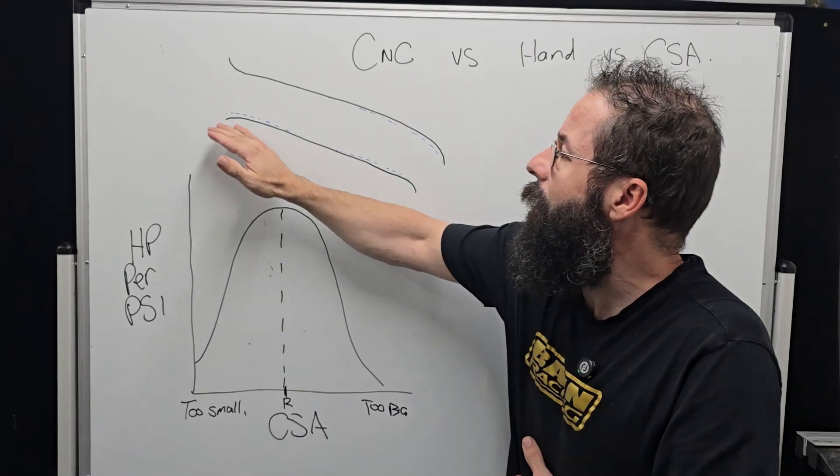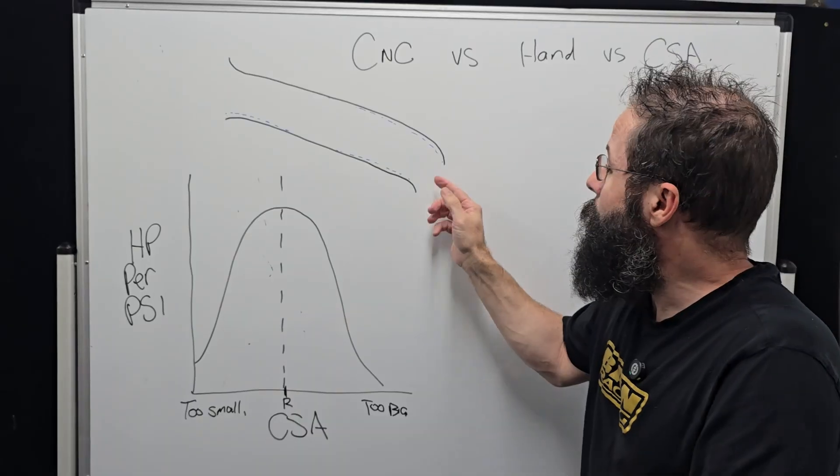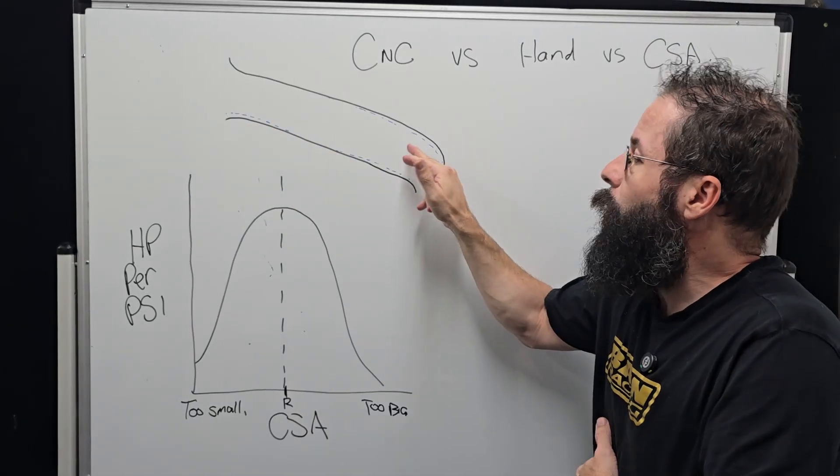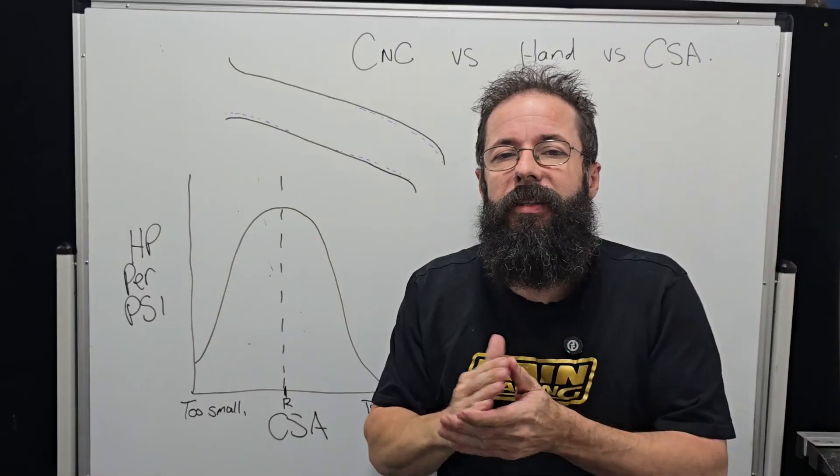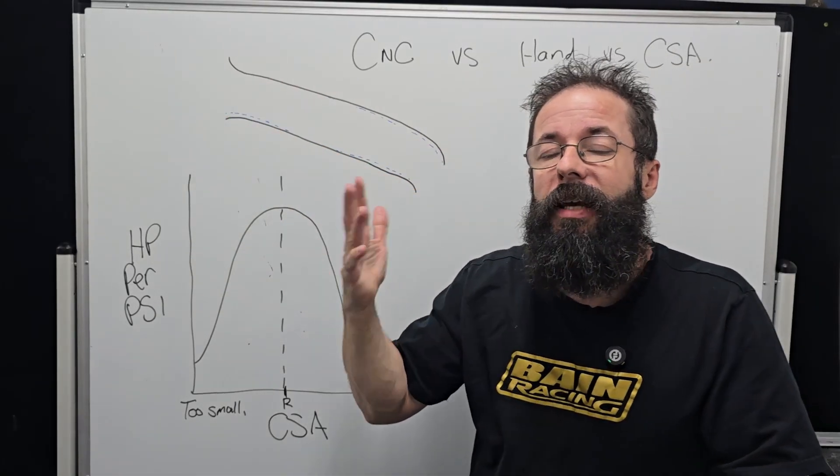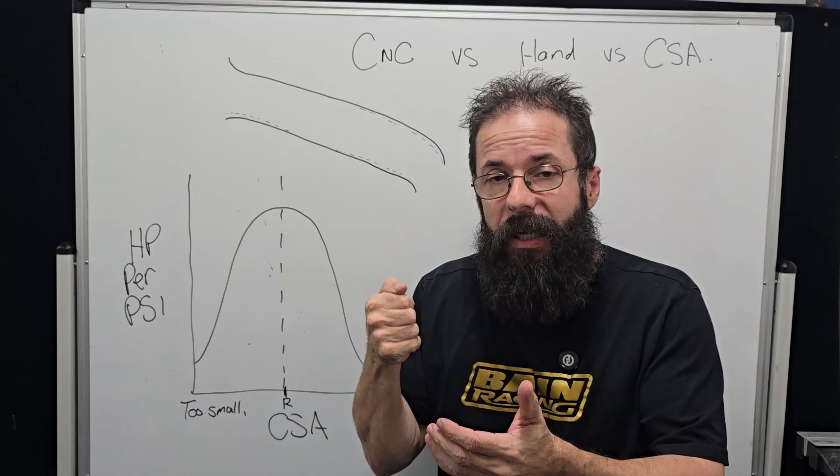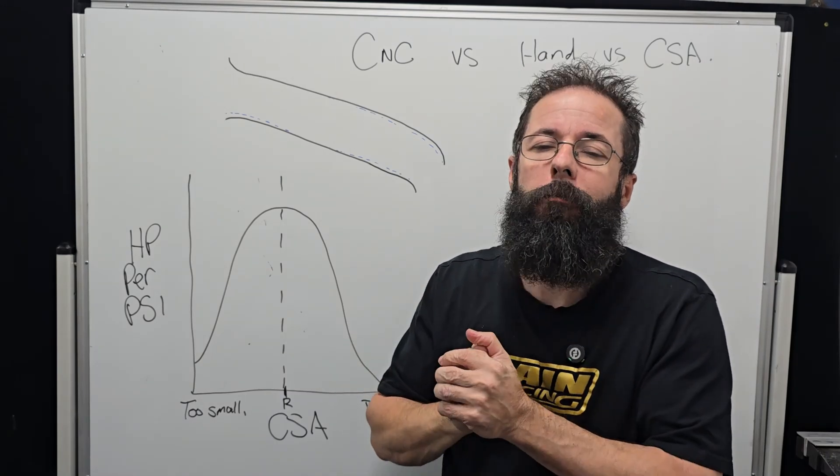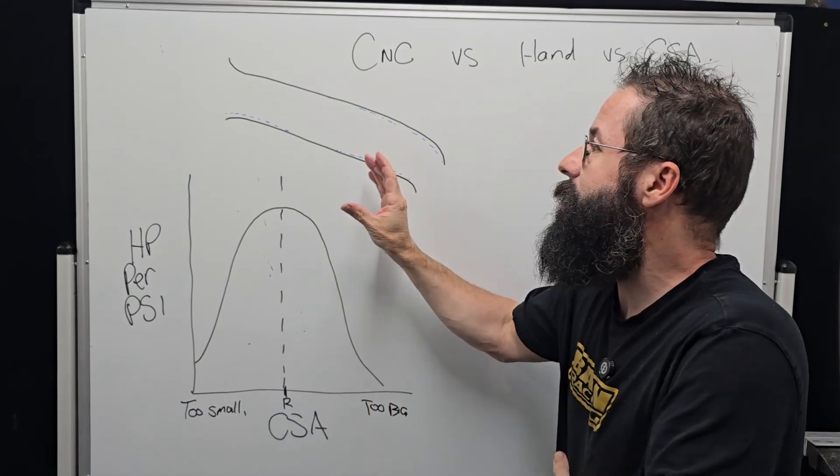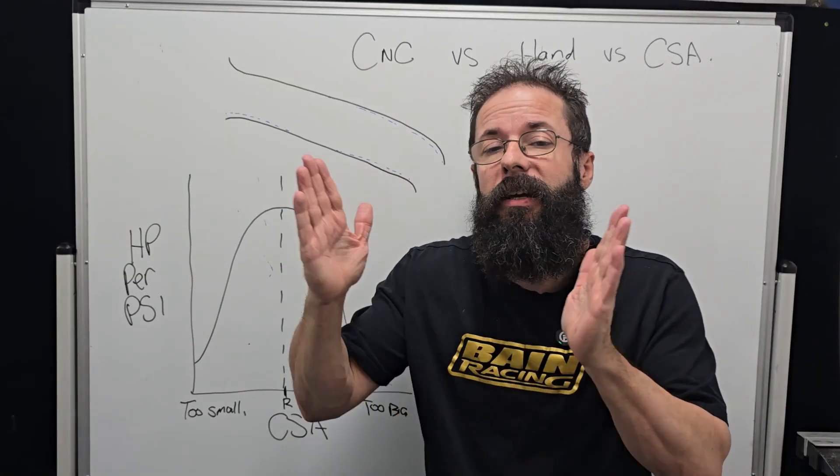If this black line was a CNC port and the blue line was a hand-ported port, even if the blue line was 10-15 CFM less, if that average CSA is better targeted to the RPM that we have, it will always make more horsepower, more torque, more everything.